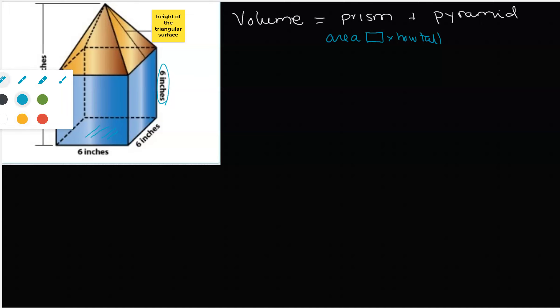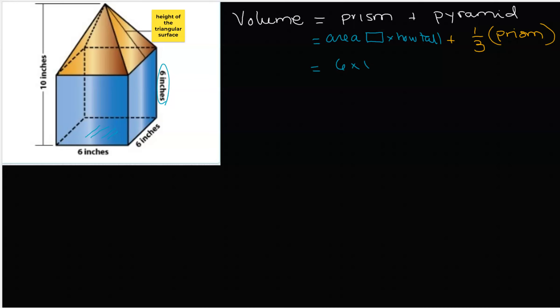The volume of the pyramid is one-third of the straight-up solid — in this case, a rectangular prism. So the volume of the blue part would be six by six, which is the area of the base shape, multiplied by how tall, which is six. That gives us 6×6×6: six times six is 36, and 36 times 6 is 216 cubic inches.